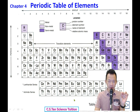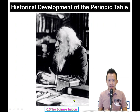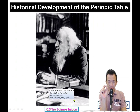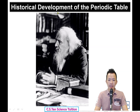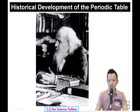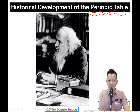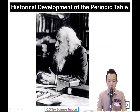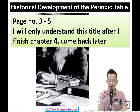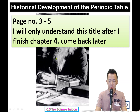Chapter 4 is a good chapter. Now, page number 3 or so - our first title in the new syllabus is: Historical Development of the Periodic Table - 元素周表从哪里来, how it was developed. But the problem is you don't know what a periodic table means yet, so how can you understand the history? So I skip this title. Copy this note: 'I will only understand this title after I finish Chapter 4. Come back later.'